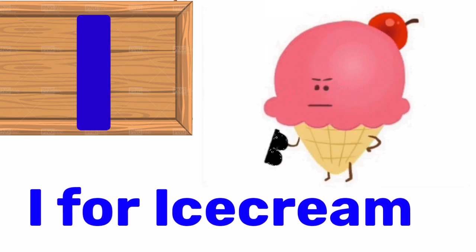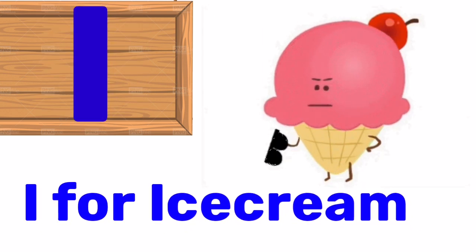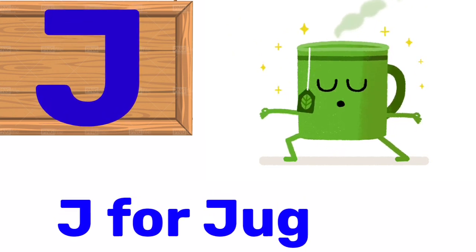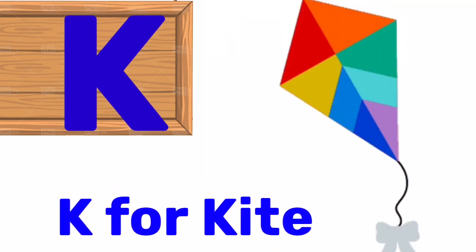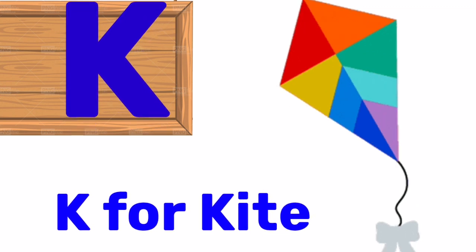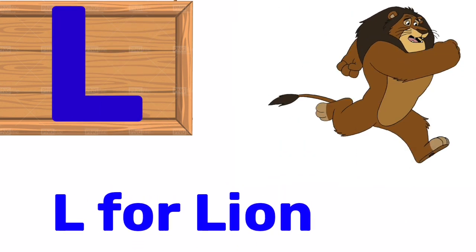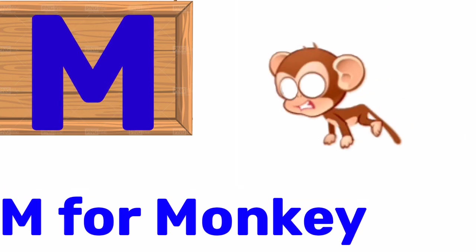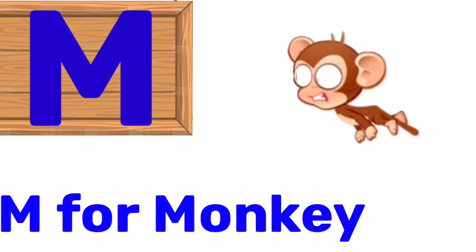I for ice cream, J for jug, K for kite, L for loin, M for monkey.